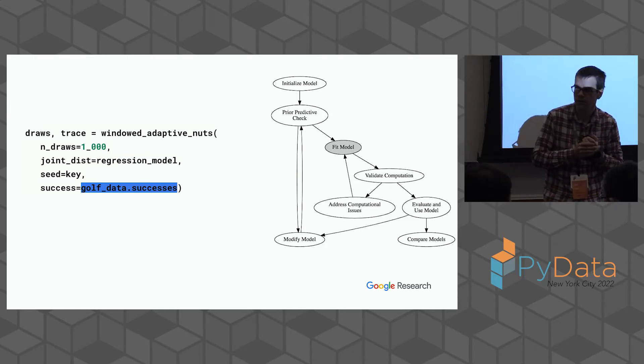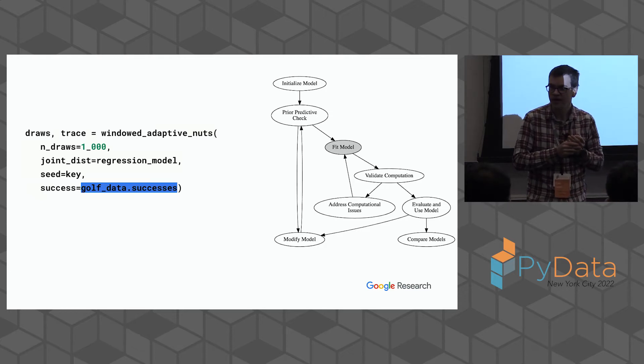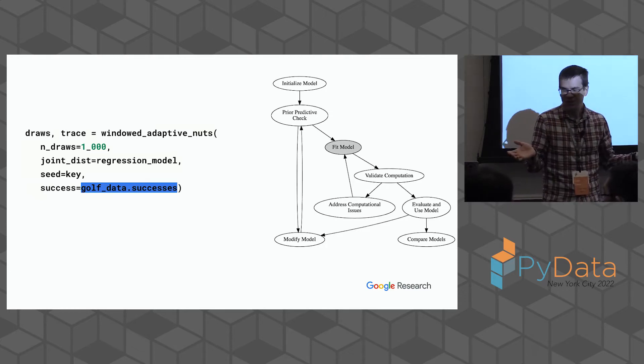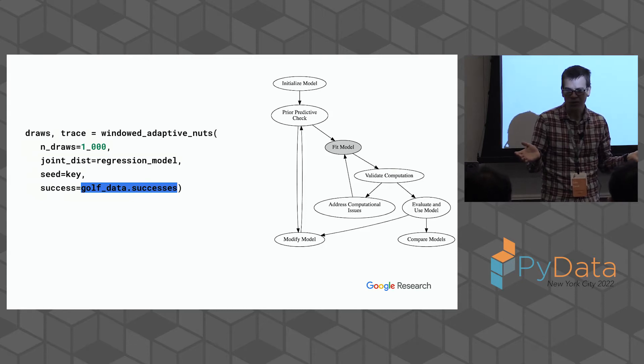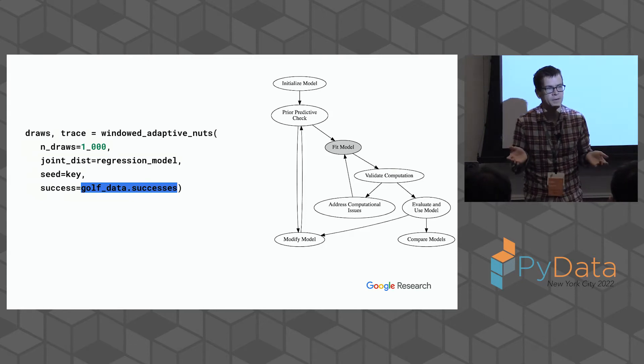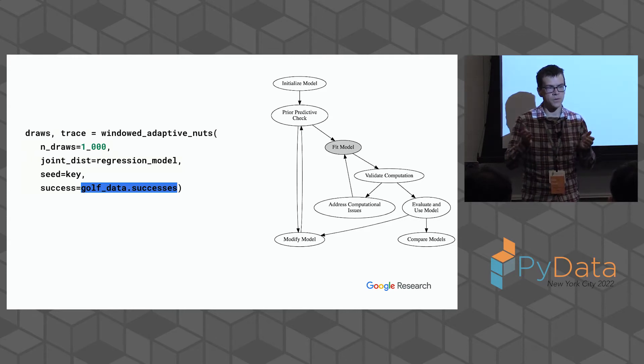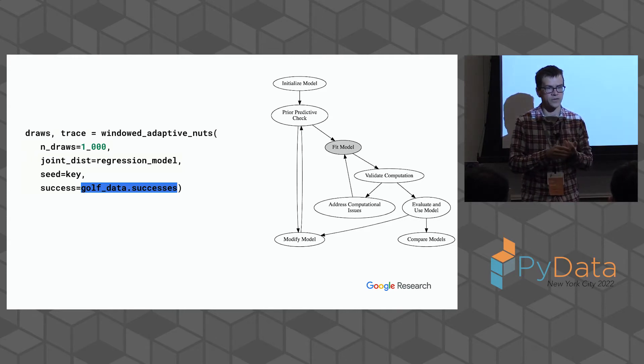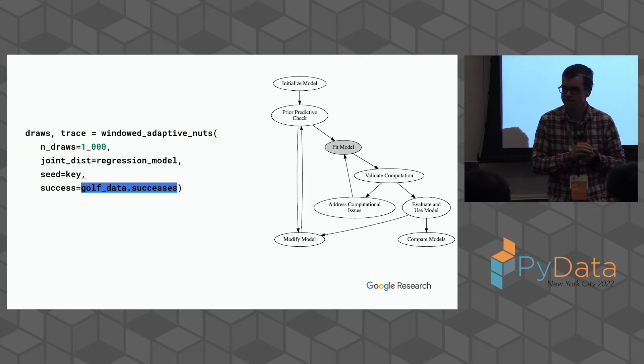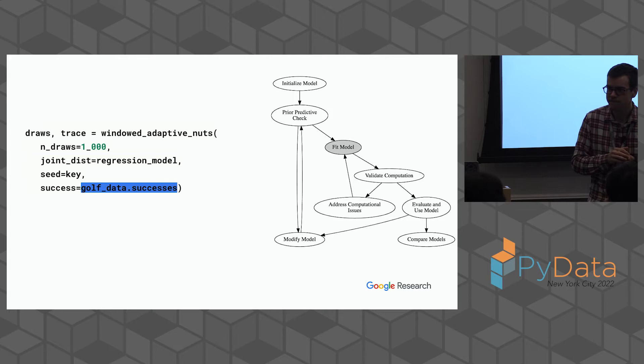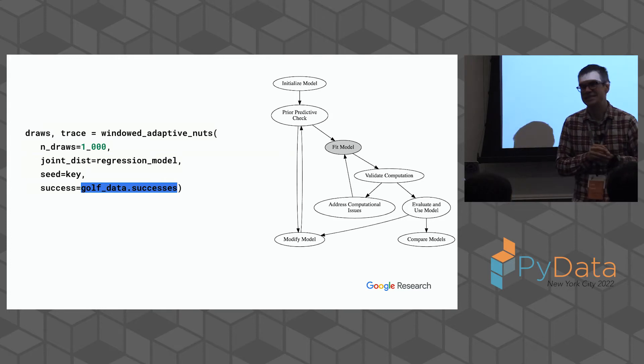I should note that right here is when we first introduce our, we actually condition right here. So we condition and say the number of successes we had was actually the number of successes from the data.